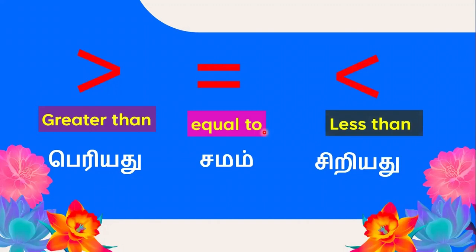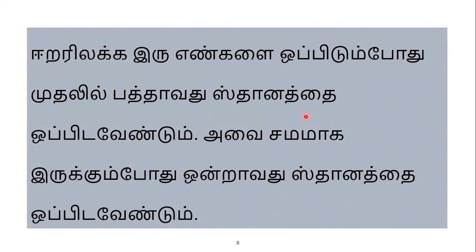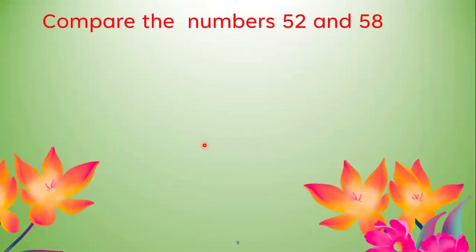Ascending order and descending order, greater than and less than — we can identify them in an easy way. We can compare numbers to determine ascending and descending order. For example, compare the numbers 52 and 58 to see if they are big or small and arrange them in order.